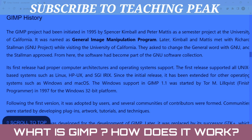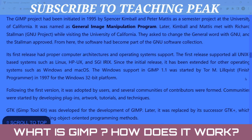The history of GIMP: the GIMP project was initiated in 1995 by Spencer Kimball and Peter Mattis as a semester project at the University of California. It was named General Image Manipulation Program. Later, Kimball and Mattis met with Richard Stallman while visiting the University of California. They asked to change the central word with GNU, and Stallman approved. From here the software became part of the GNU standard.